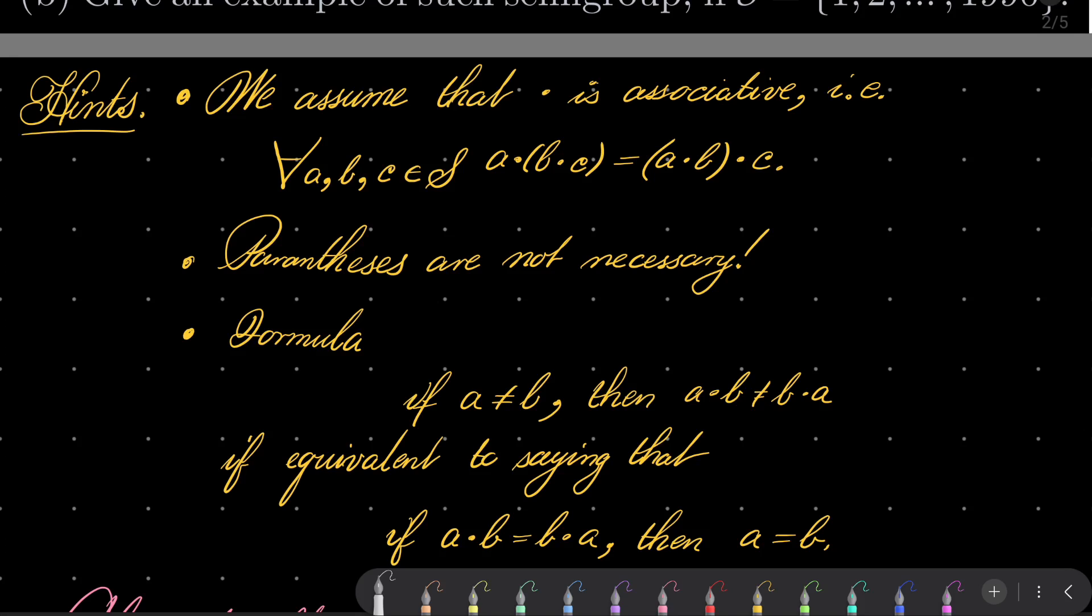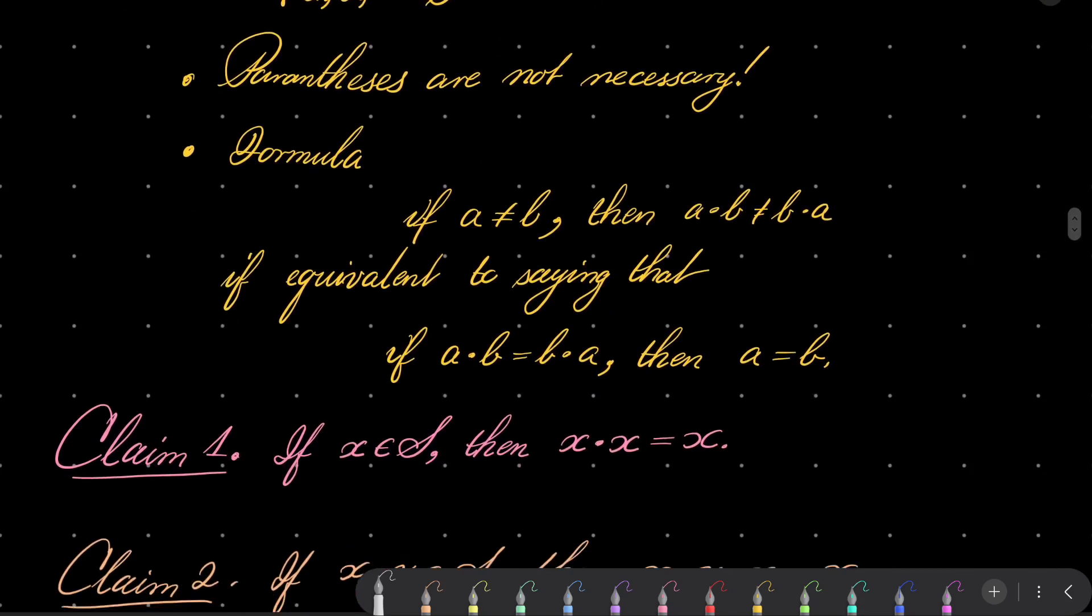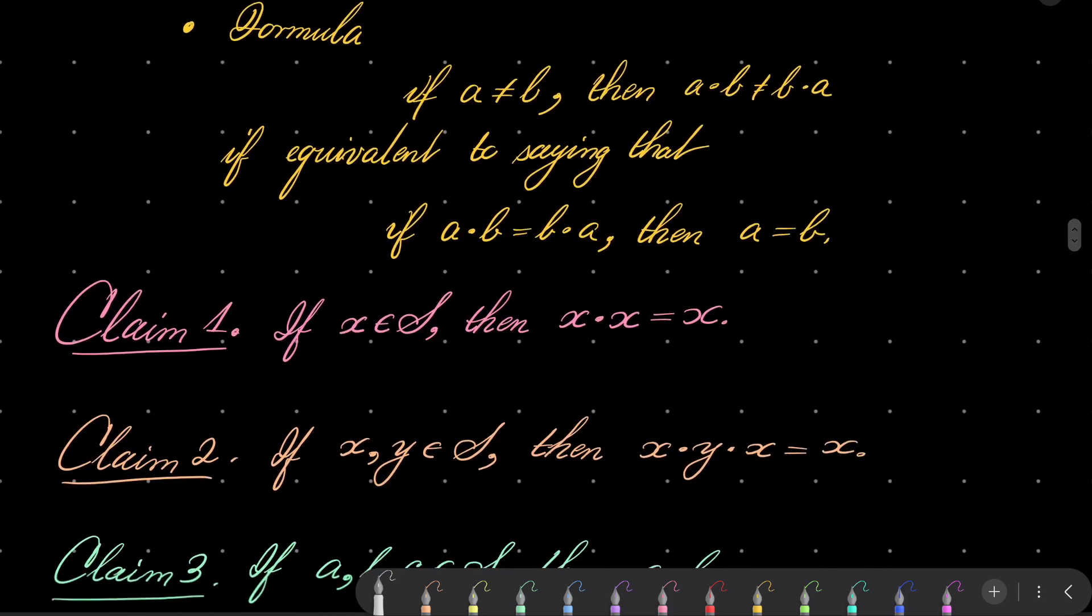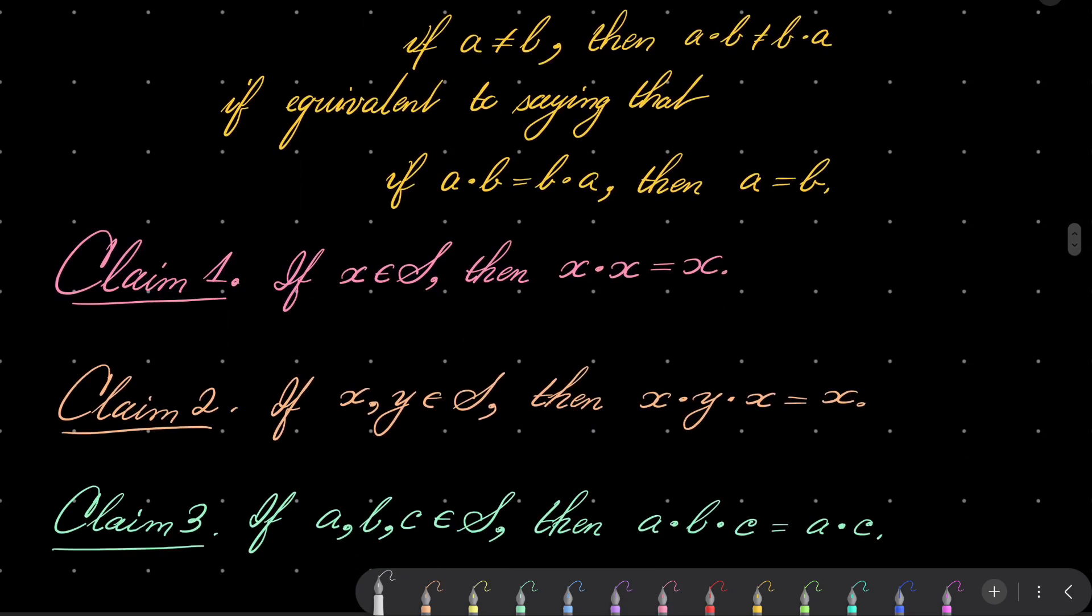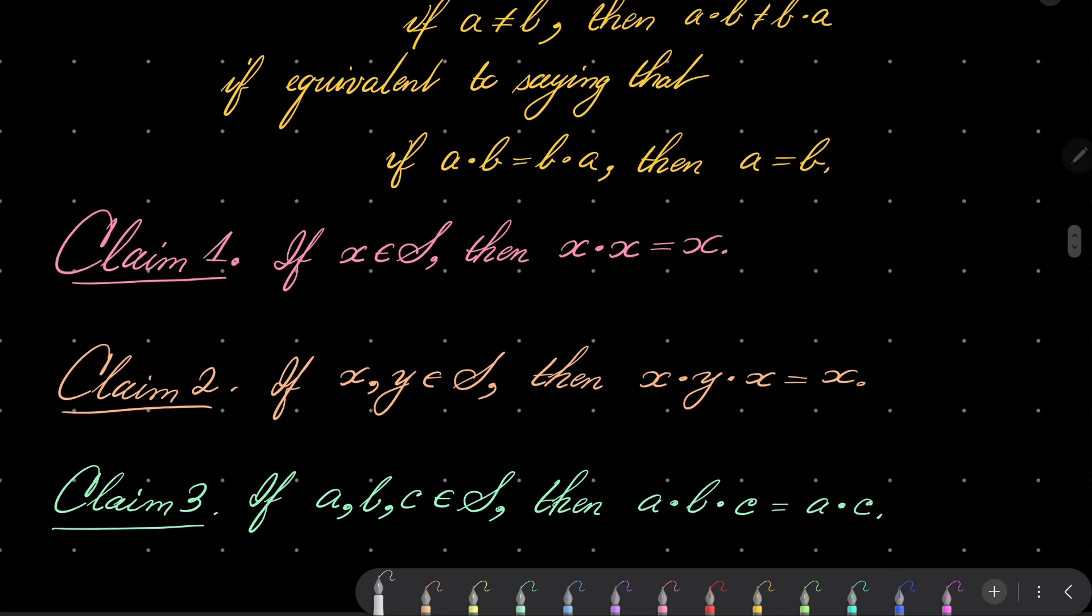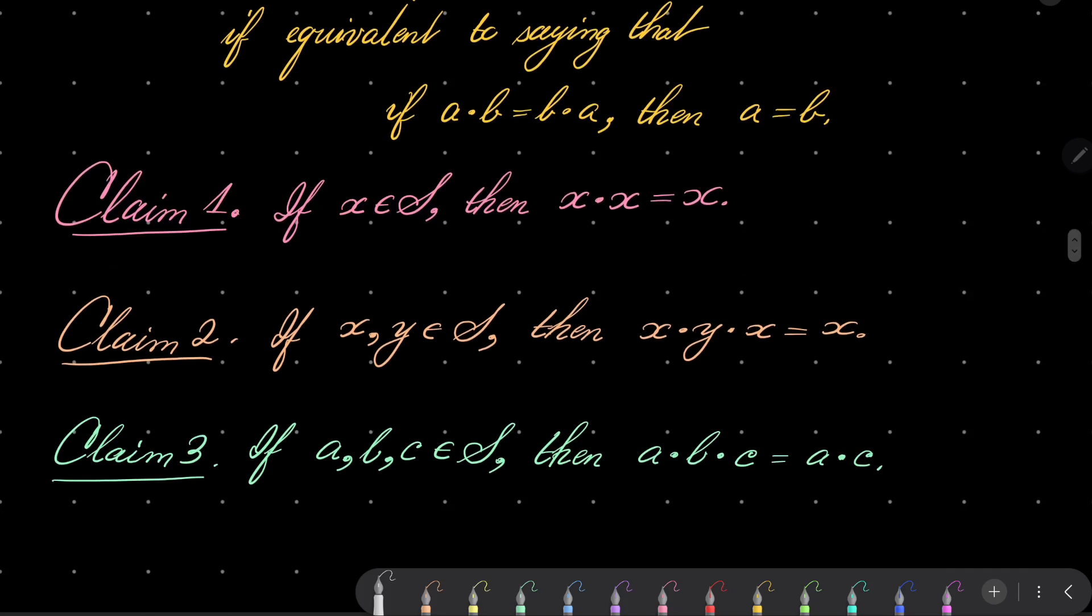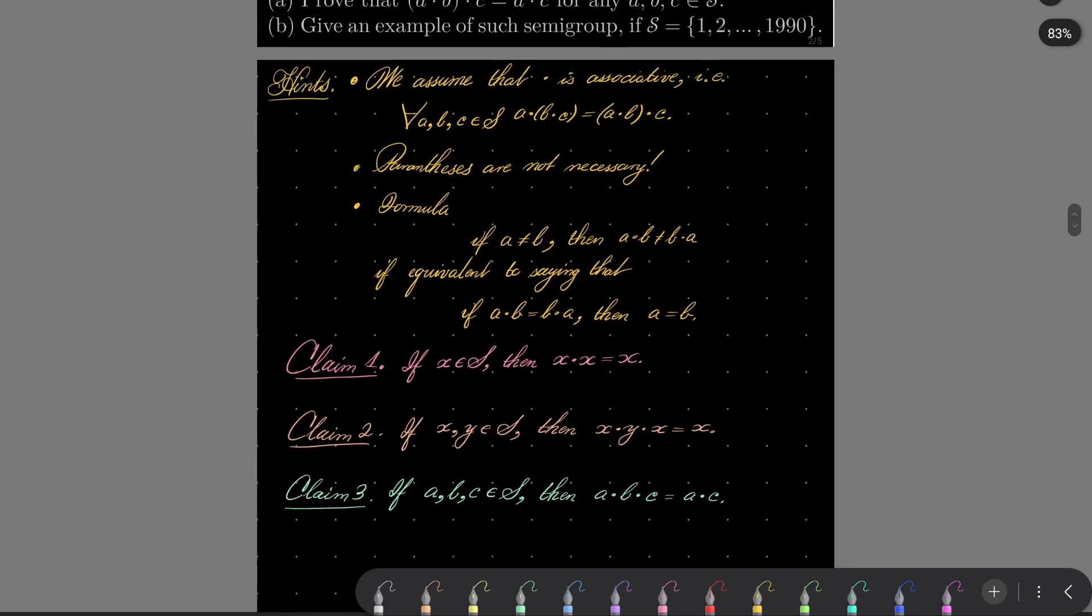And now, the main proof follows from these three claims. Claim number one: for every element x, x·x·x equals x. Claim number two, less obvious: for every two elements x and y of our set, x·y·x equals x. So we can introduce this middle term y. And claim number three is actually what we want to prove. So prove each claim and finally give an example. The example is pretty straightforward if you think about it. Give this problem a try and I will see you in just a minute.